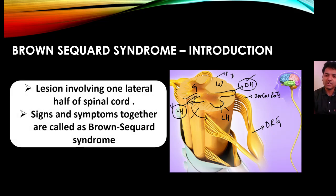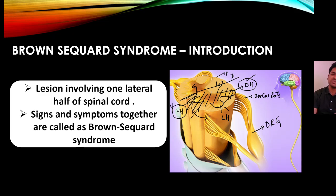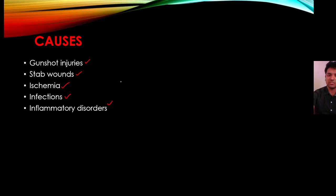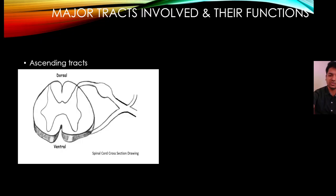Brown-Séquard syndrome is a lesion involving one half of the spinal cord that is completely damaged. Causes include gunshot injuries, stab wounds, loss of blood supply to that part of the spinal cord, infections, and inflammatory disorders.